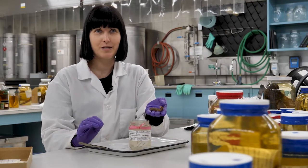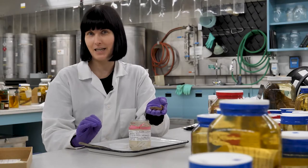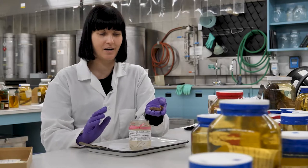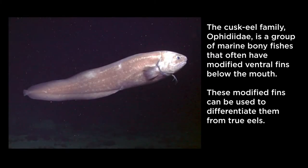He was able to determine that it is a Cusk eel in the genus Ophidion. Ophidion actually means snake-like in ancient Greek. He realized that it was something slightly different — it wasn't like any other Ophidion that we knew about — so he knew it was something that needed a new name.